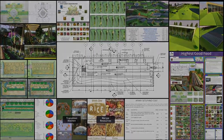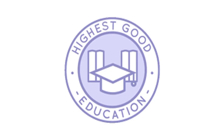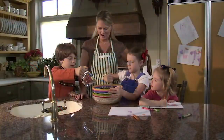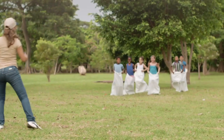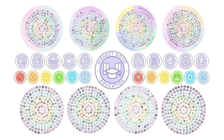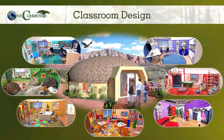The next component is highest good education — this component is complete and pretty much ready to launch once we're on the property. One Community's approach to highest good education is designed for all age groups, adaptable to any schooling environment, inspiring and fun for all participants, and includes national standards, all national subjects, lesson plans, teaching strategies, learning strategies and tools, classroom design, and more.